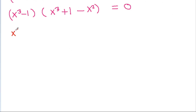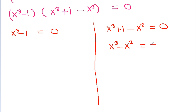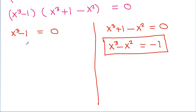So this becomes x cube plus 1 times x cube minus 1 minus x square times x cube minus 1 equals 0. We can take x cube minus 1 common, giving x cube plus 1 minus x square equals 0. So either x cube minus 1 equals 0, or x cube minus x square plus 1 equals 0. From here, we can get x cube minus x square is equal to minus 1. And from x cube equals 1, x will be equal to 1, omega, and omega square.